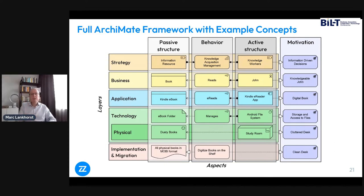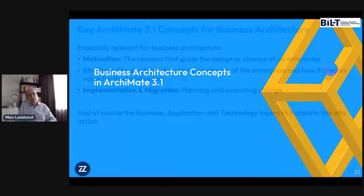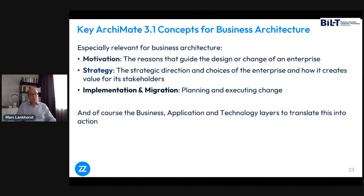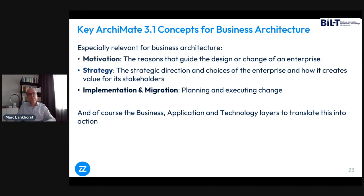That gives you the whole stack of layers that Archimate supports — not an Archimate course, just an overview of the language's coverage. For business architects, the top strategy layer and the motivation column are most important. The motivation concepts cover stakeholders, their goals, and requirements. The strategy layer contains capability, resource, and course of action — the things you need at the strategic level, the core of your business architecture. The implementation migration concepts help you plan how you get from A to B using projects, programs, agile value streams, and plateaus to model stages.